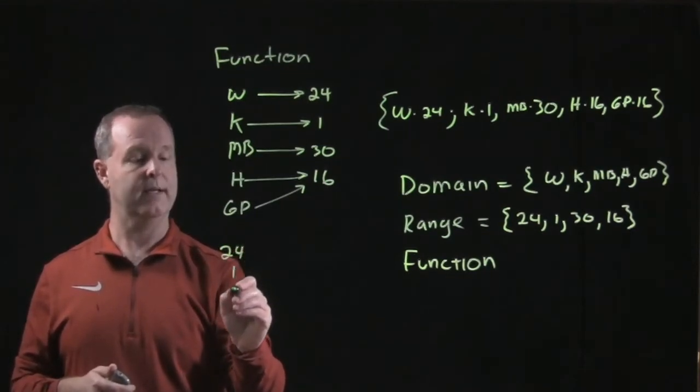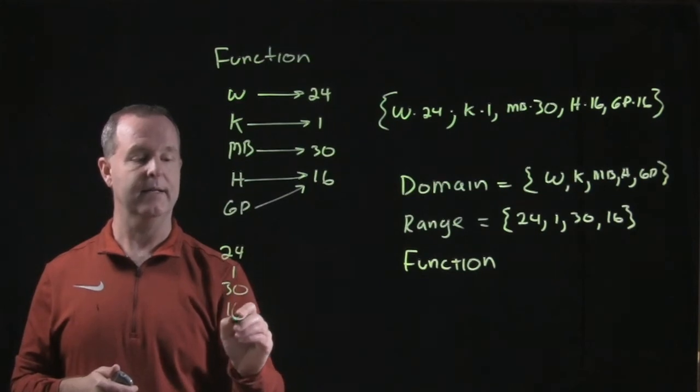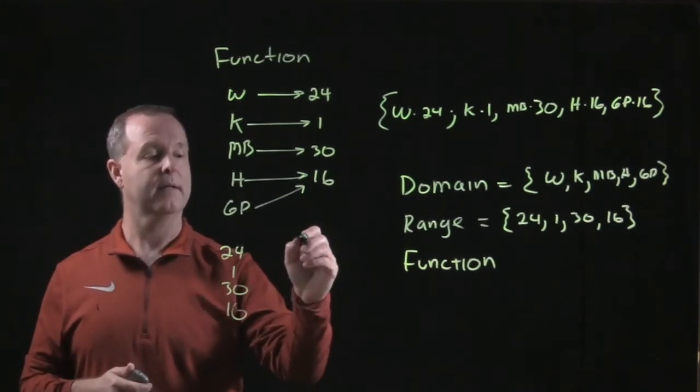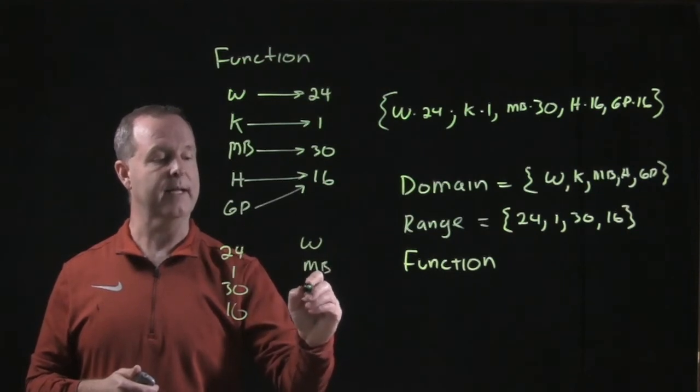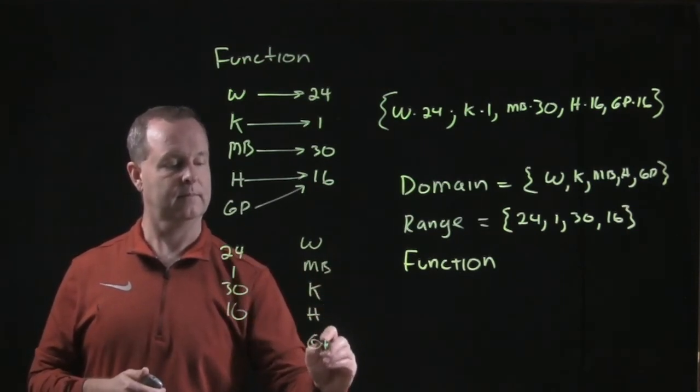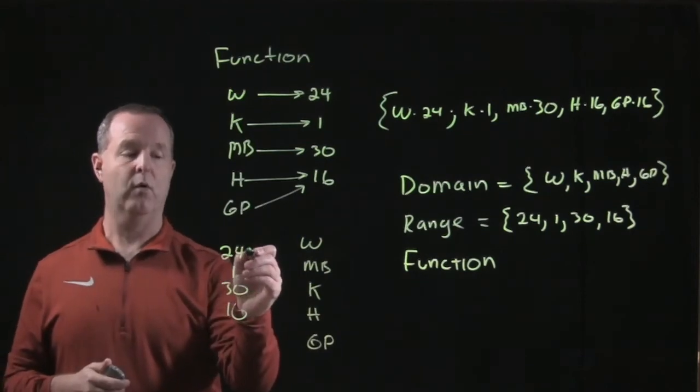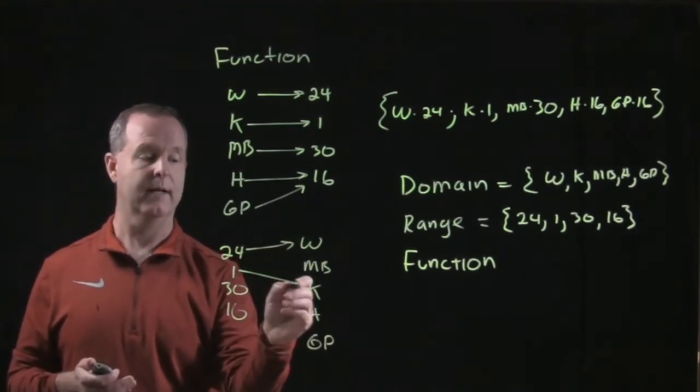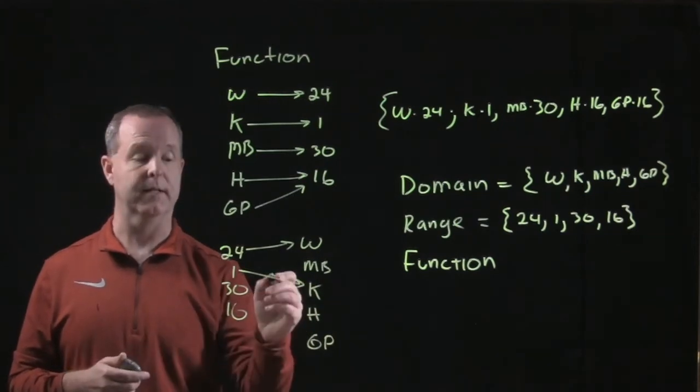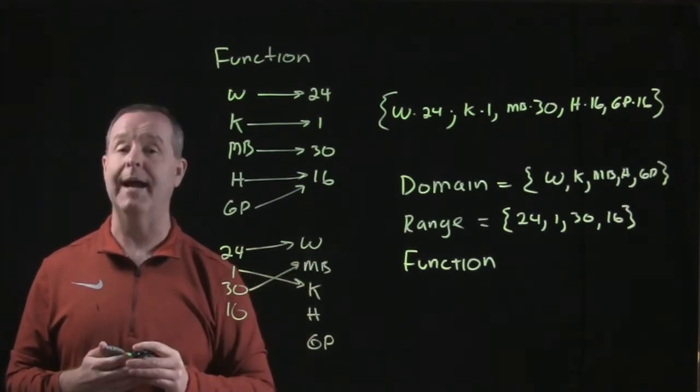24, 1, 30, and 16, and I want to pair them up with the names or the members of the family. 24, it can only match up with one person. Good. 1 can only match up with one person. 30 can only match up with one person.